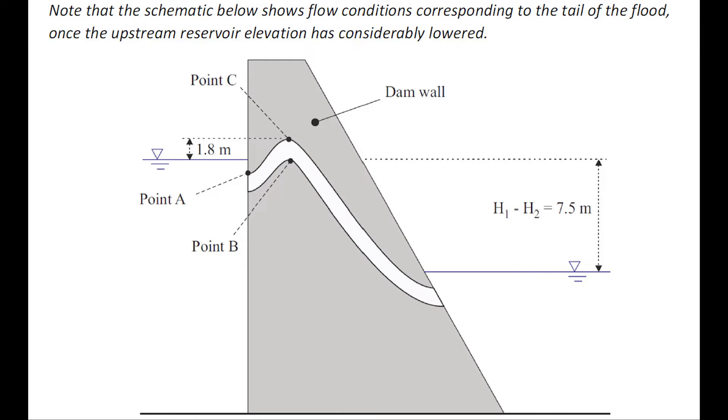Note that the schematic below shows the flow condition corresponding likely to the tail of the flood when the upstream reservoir elevation has considerably lowered.